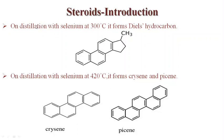A very important point: on distillation with selenium, steroids at 300°C form Diels hydrocarbon. This is Diels hydrocarbon — it shows a phenanthrene nucleus and a cyclopentene ring with a methyl group at that position. On distillation with selenium at 420°C — increasing the temperature — it forms chrysene and picene. These compounds are formed at 420°C.